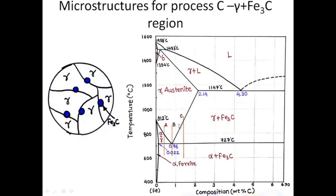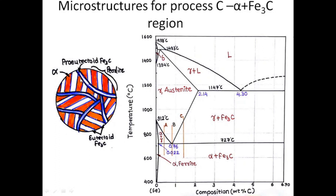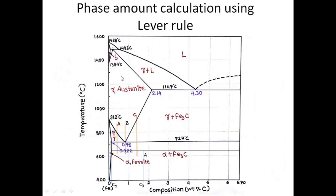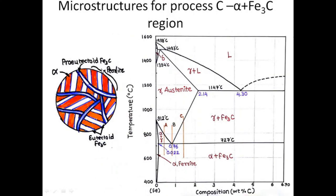For Reaction C, we have gamma austenite initially. As we enter the gamma plus Fe3C region, Fe3C particles nucleate near the grain boundaries, and as we reduce the temperature these particles grow. When we cross the eutectoid line, we have a structure with pro-eutectoid Fe3C. In the pearlite, we have eutectoid Fe3C and alpha.